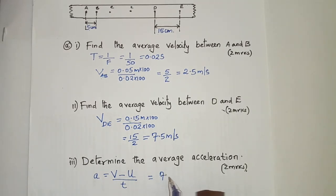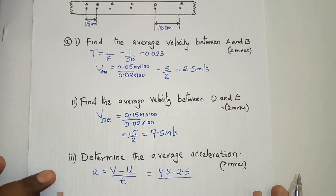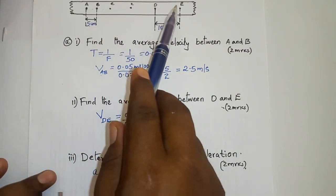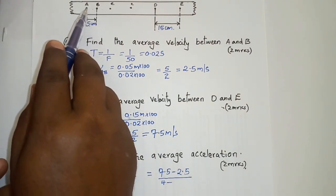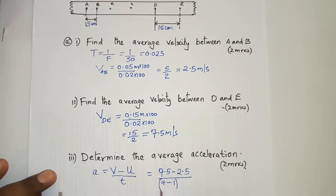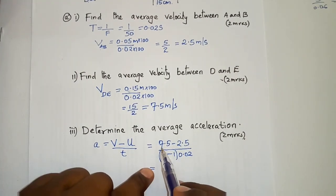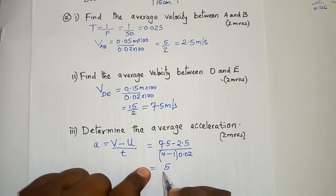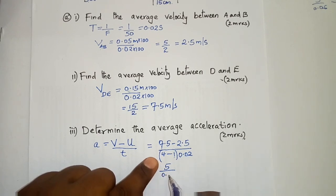So we have 7.5 minus 2.5, divided by the time taken from A to E. Counting the dots from A to E, we have 1, 2, 3, 4, 5 — so the final dot is the 5th. We take 4 minus 1, which is 3 intervals, as the initial tick is between A and B. So change in time is 3 times 0.02, which gives 0.06 seconds. Therefore, 7.5 minus 2.5 equals 5, and 3 times 0.02 equals 0.06.